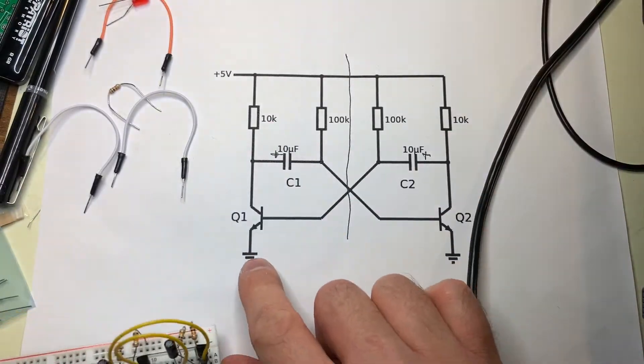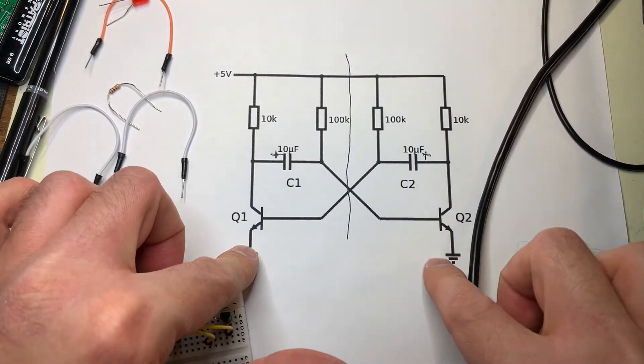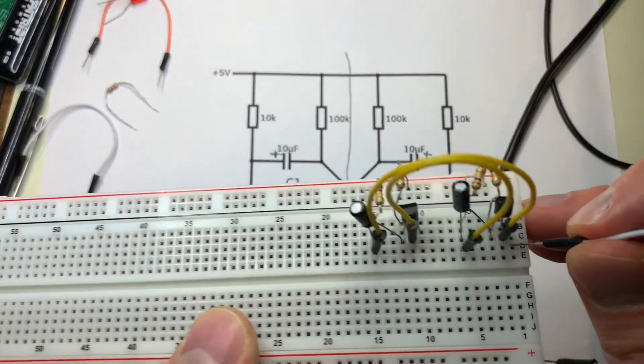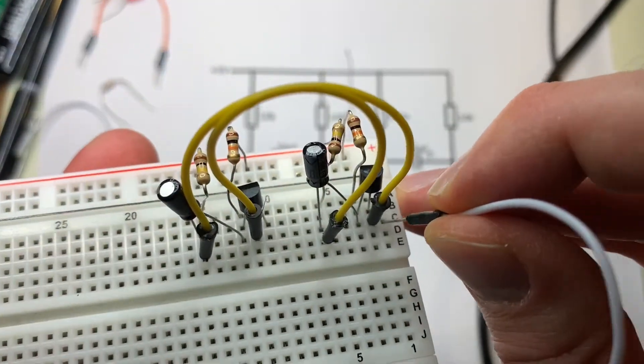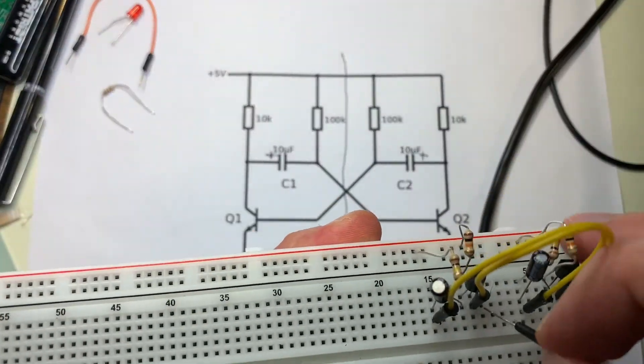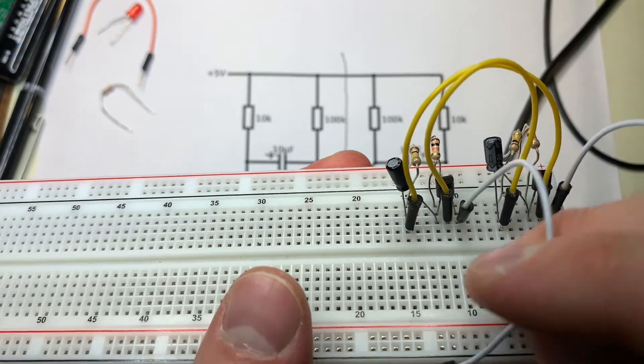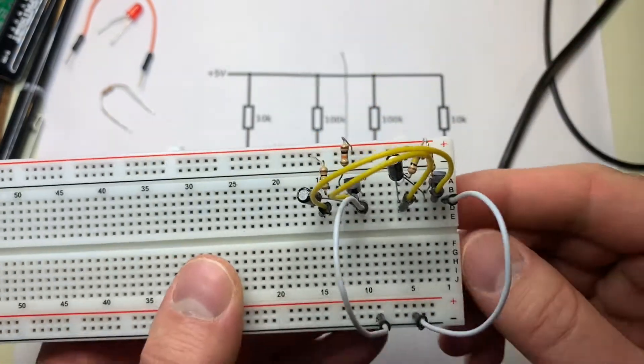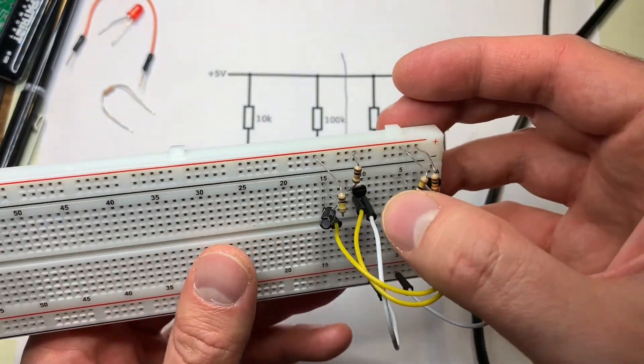And finally, we need to take some jumper wire and connect the emitter of the transistor to ground on each side. So it's this third pin here to ground, and the third pin to ground. And that's it. That's the fully functioning circuit.